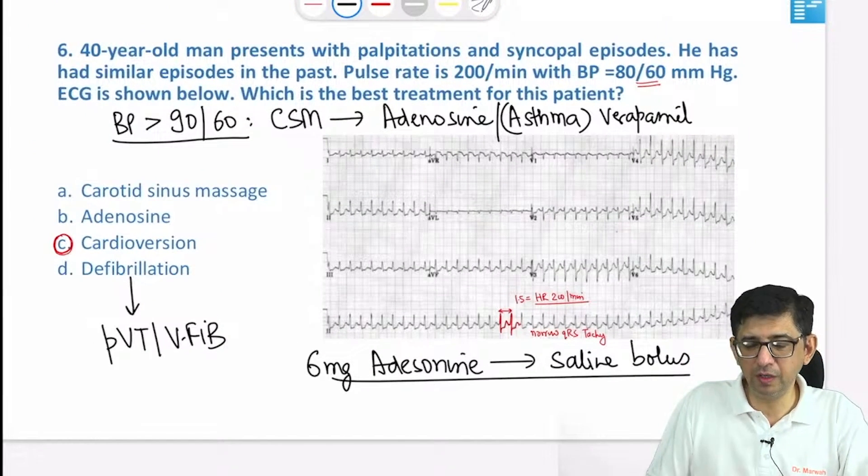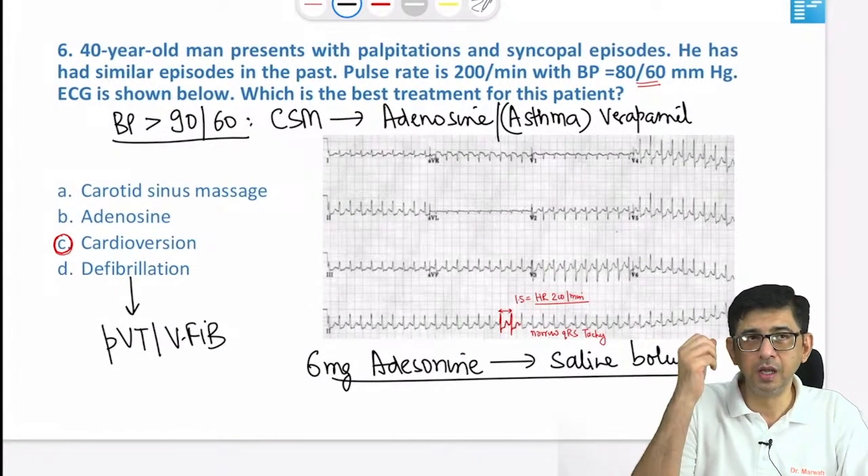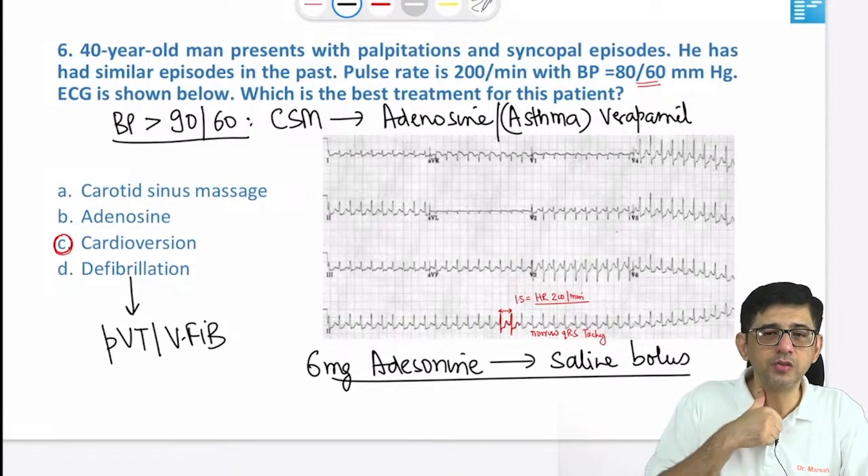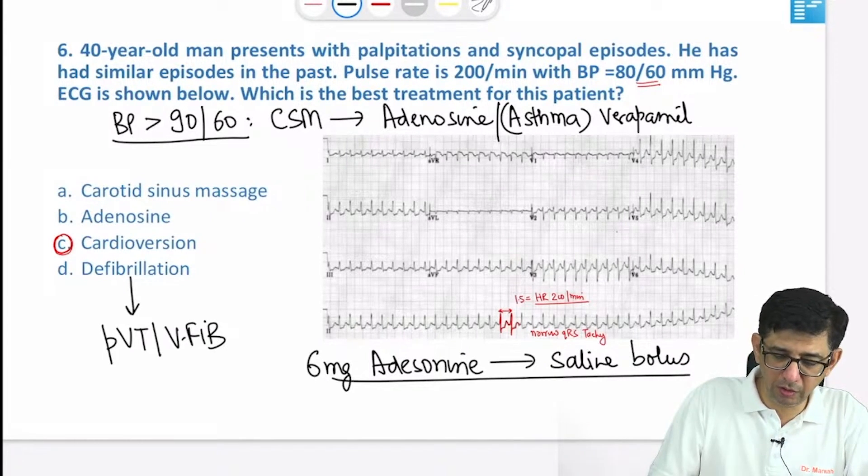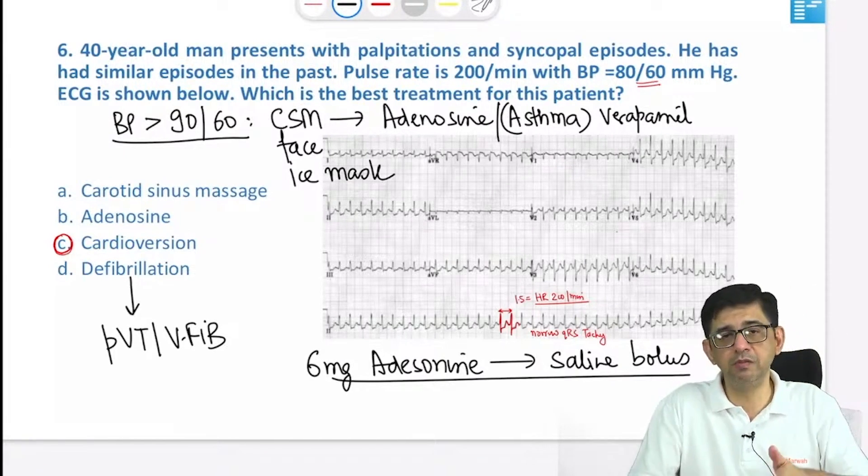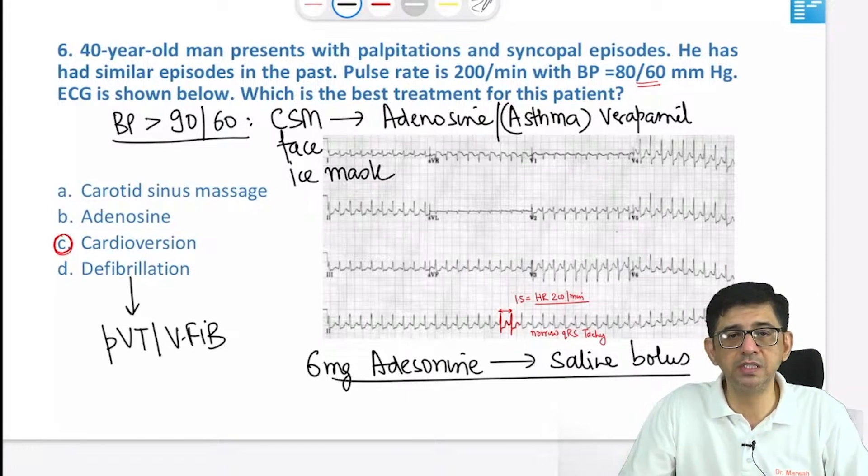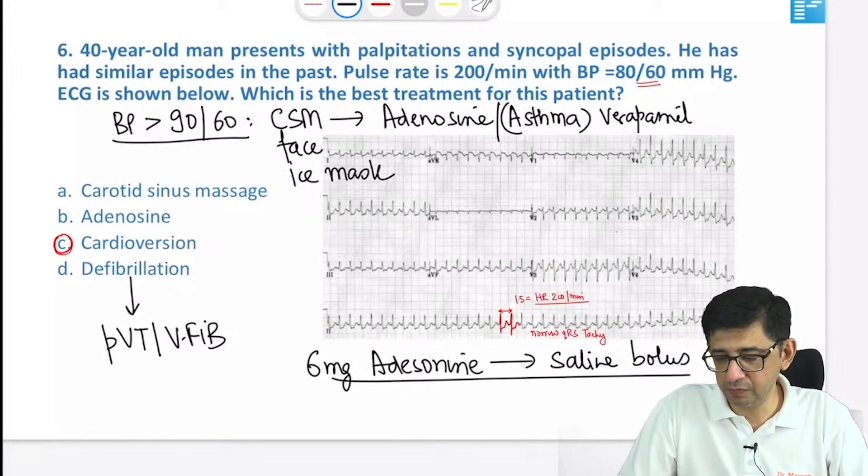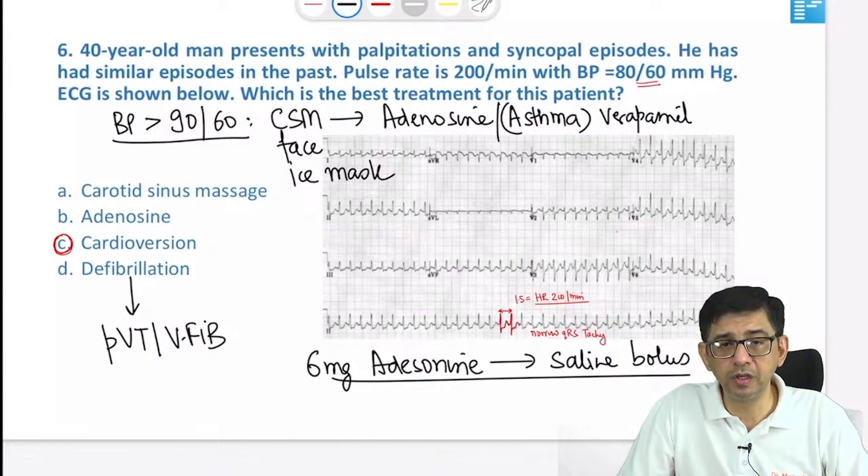We will not do Valsalva now because the person will be having difficulty. If somebody is having palpitations, to pinch his nose and ask him to do Valsalva is difficult. Carotid sinus massage is better, or a face ice pack is much better. Had he mentioned what is the first line when BP was more than 90 by 60, I would have answered A followed by B. Because the BP is low, I answered C.